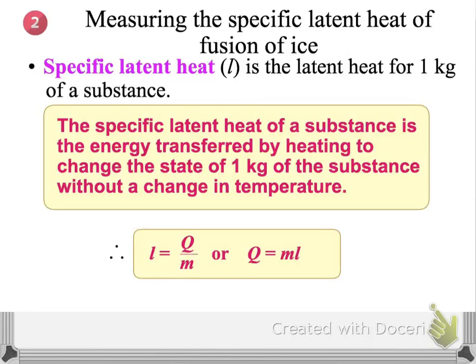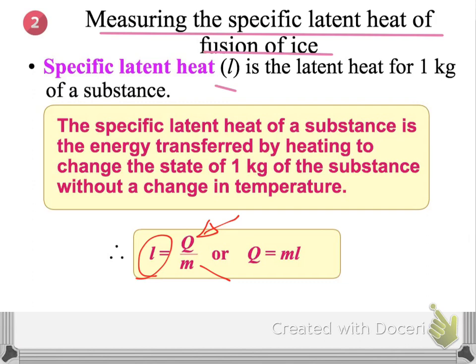After watching the video about how to measure the specific latent heat of fusion, let me explain in a little more detail. Remember that if we want to find out the specific latent heat of fusion — that means L — we have to find out Q and M by using an experiment.